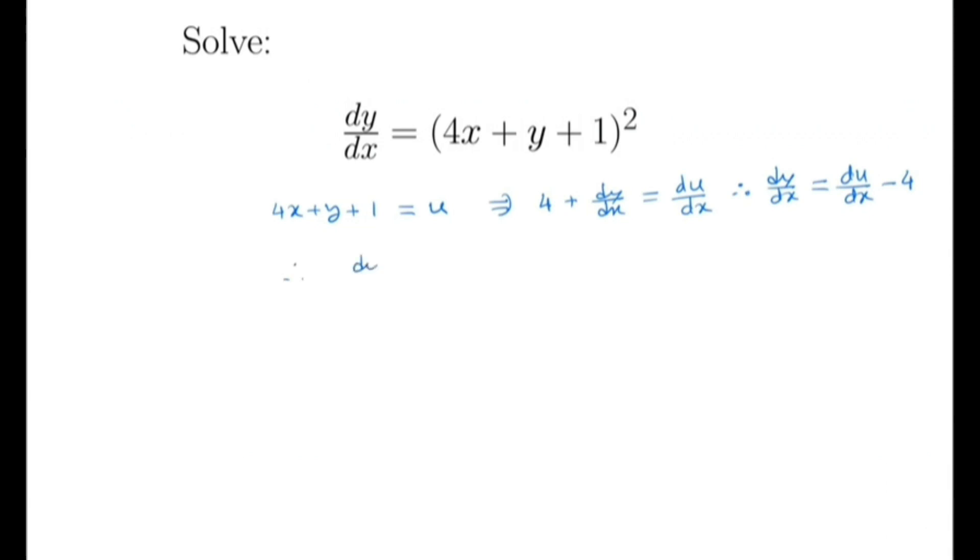So we get du/dx - 4 = u². So we have du/dx is nothing but u² + 4.